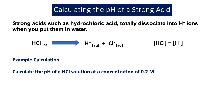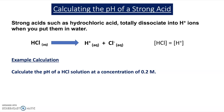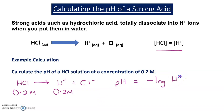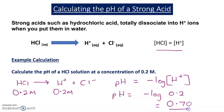Now we're going to look at some example calculations where you have to calculate the pH of a strong acid. Taking hydrochloric acid splitting up into H⁺ ions and Cl⁻ ions, the concentration of hydrochloric acid equals the concentration of H⁺ ions because every HCl molecule splits up into one H⁺. So if the concentration of HCl is 0.2 mol dm⁻³, the H⁺ concentration is also 0.2 mol dm⁻³. pH = −log(0.2) = 0.70.